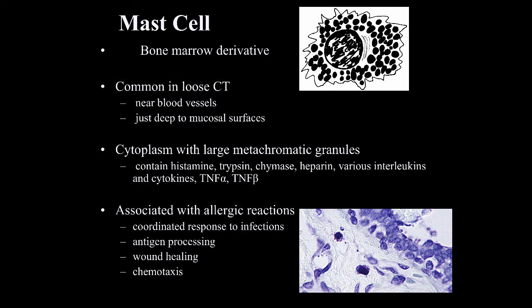Mast cells are another connective tissue cell. These are bone marrow-derived cells, and mast cells and basophils found in peripheral blood are thought to mature from a common progenitor cell. Mast cells are very common in loose connective tissue, found near blood vessels and just deep to mucosal surfaces. They have abundant cytoplasm with very large metachromatic granules containing substances like histamine, trypsin, chymase, heparin, various interleukins, cytokines, and tumor necrosis factor.